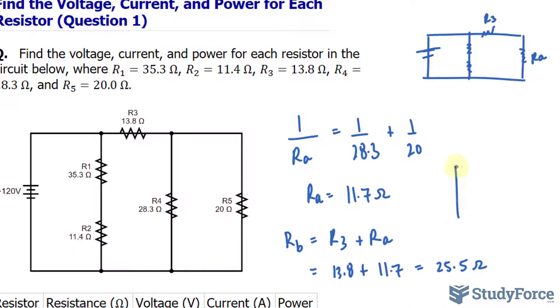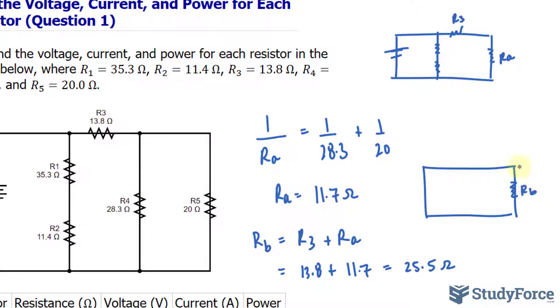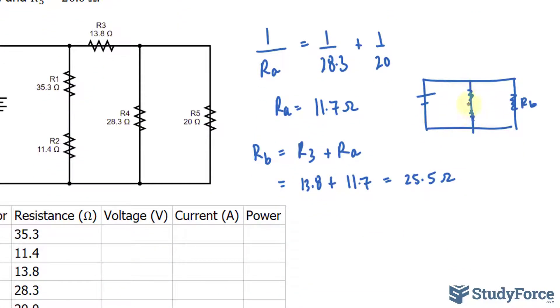Again, I will redraw the circuit, where I have R sub B represented right here, and that eliminates R sub 3. So we still have these two that we need to take into account, and that is our second transformation. Our third transformation will be combining these two, because they are in series. So let's go ahead and do that. We'll call their combination RC. Since they're in series, we can just add up 35.3 plus 11.4 ohms, and you should end up with 46.7 ohms. So these two are 46.7 ohms.